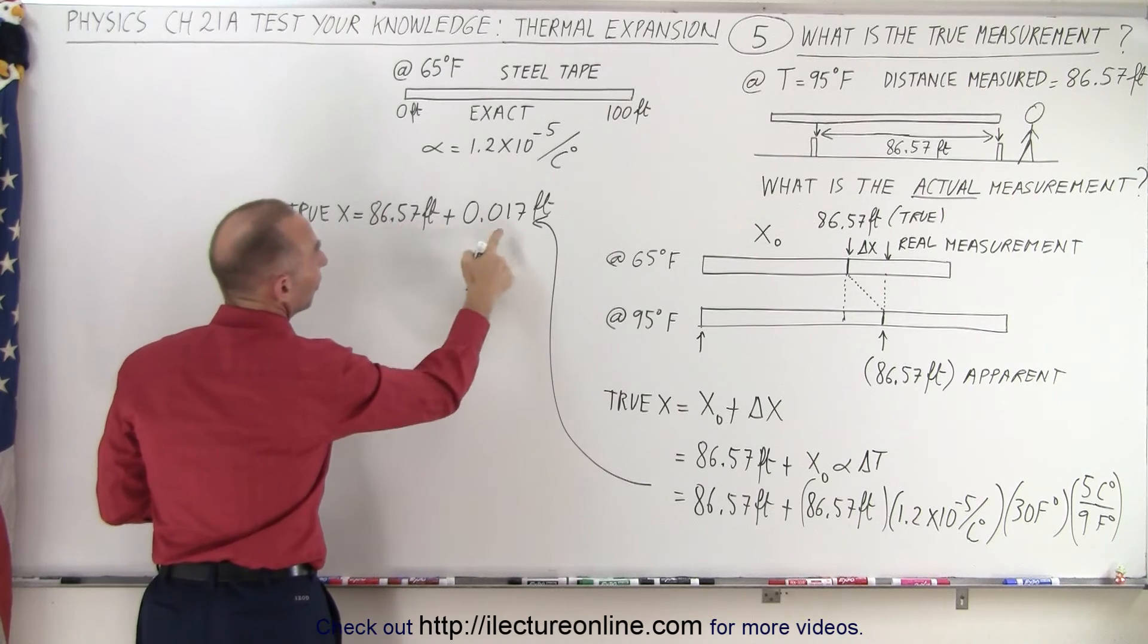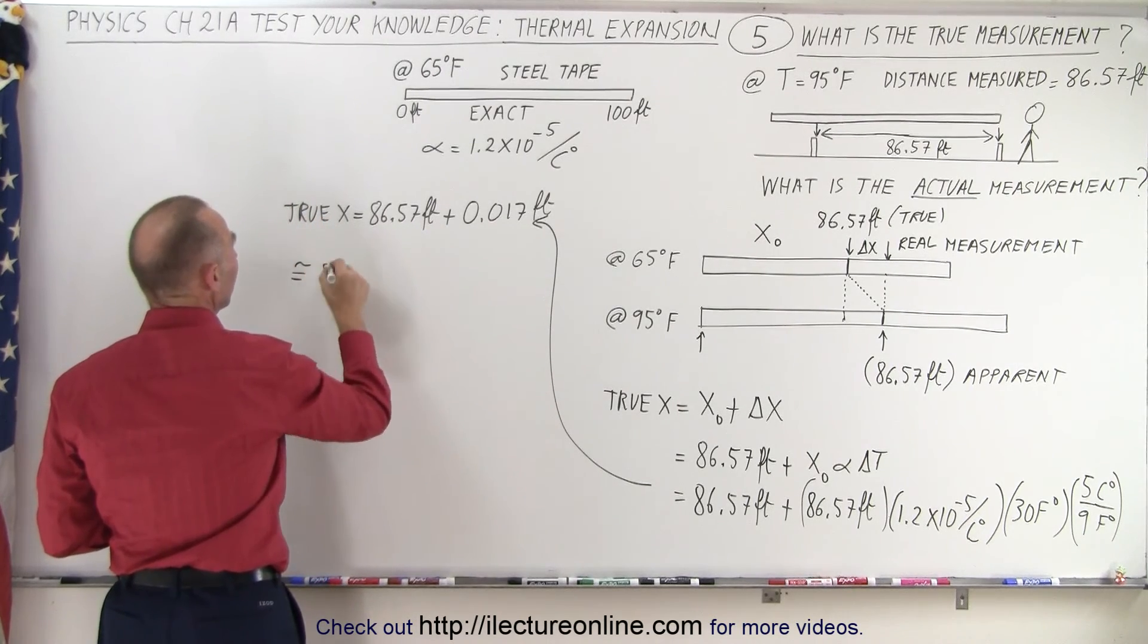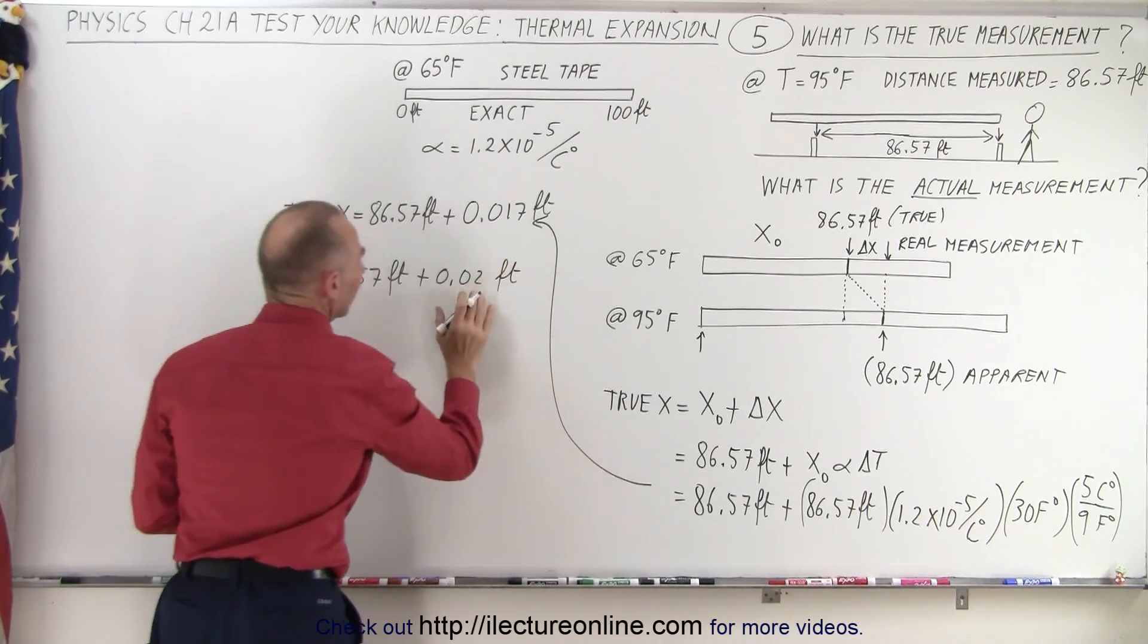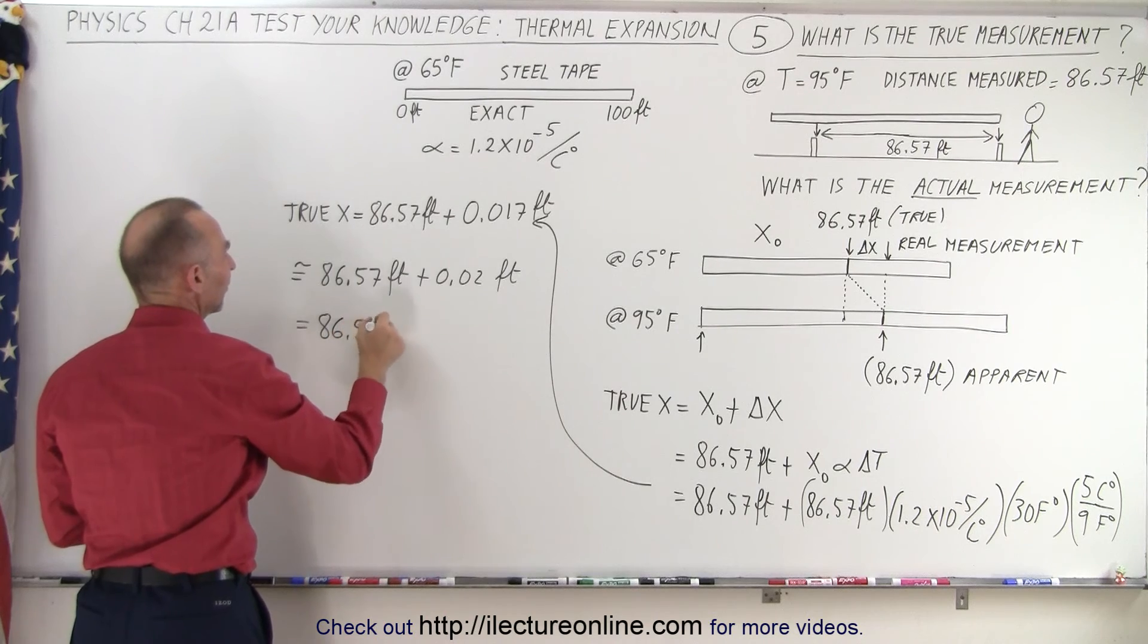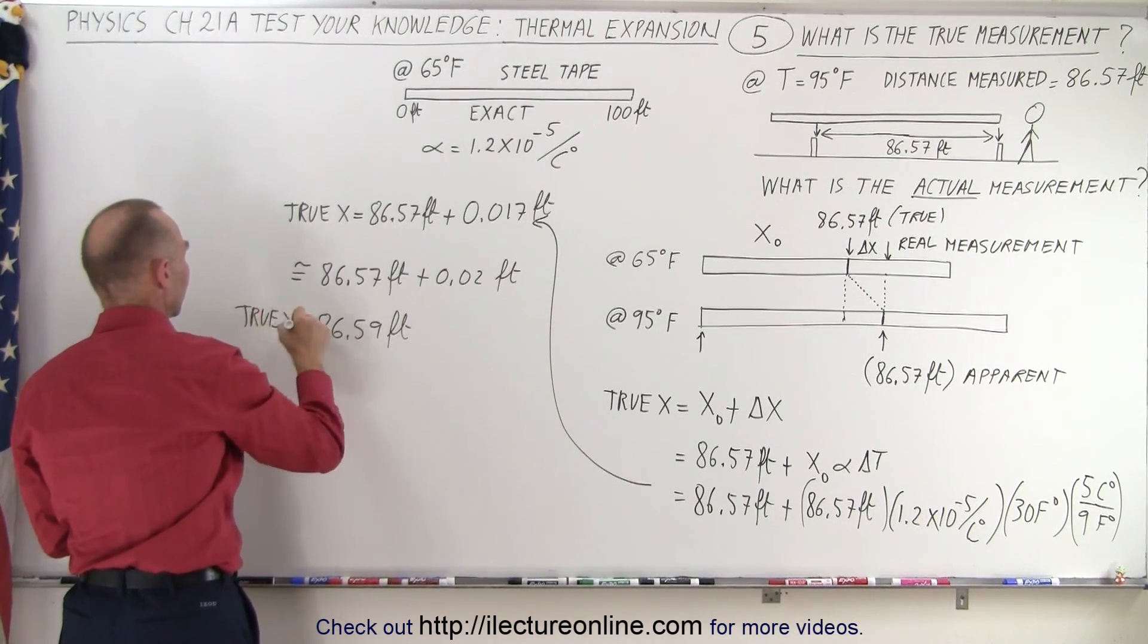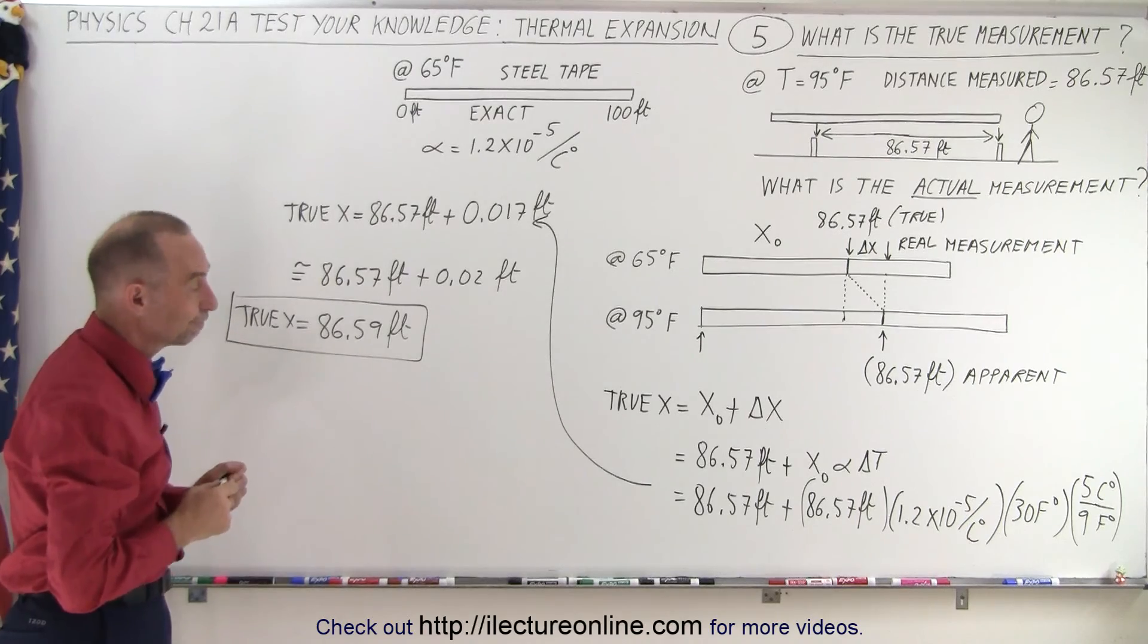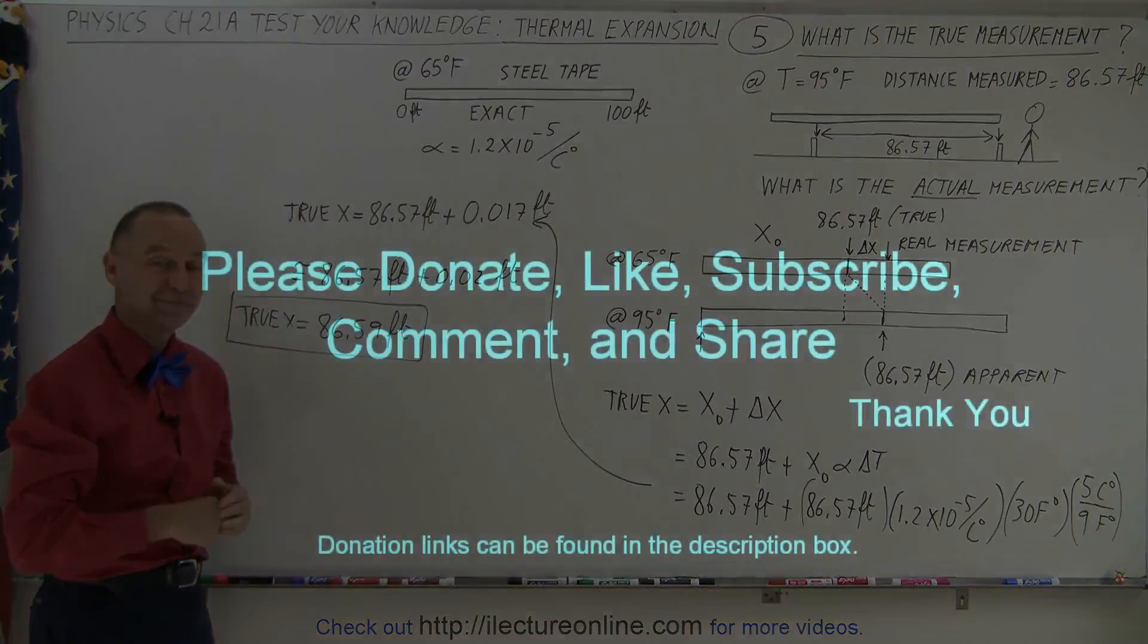And notice we have two decimal places here, we have three decimal places here, which is approximately equal to 86.57 feet plus 0.02 feet. Round that off to two decimal places, so this equals 86.59 feet as the true distance, if we had measured the very same distance with the tape when the temperature was 65 degrees. And that is how that's done. Thank you so much.